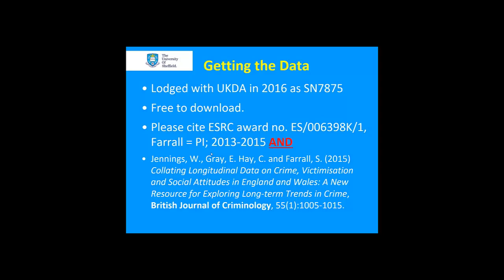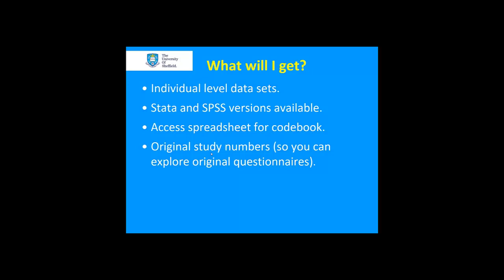When you download the dataset you get the individual-level data files in Stata and SPSS versions, plus an Access spreadsheet that serves as a codebook, and the original study numbers so you can go back and explore the original questionnaires. What you don't get are the questionnaires, survey reports, and technical reports that the original individually downloaded datasets would have included. So if there are particular survey years you're interested in, you may want to download those questionnaires separately to know the exact question order — since as we all know, there may well be question order effects.